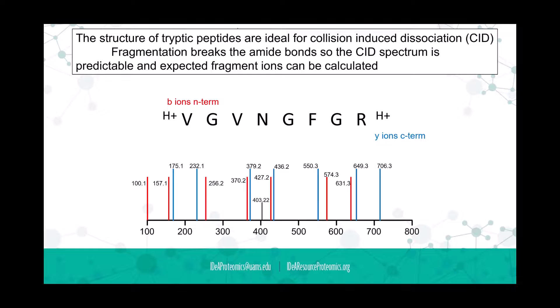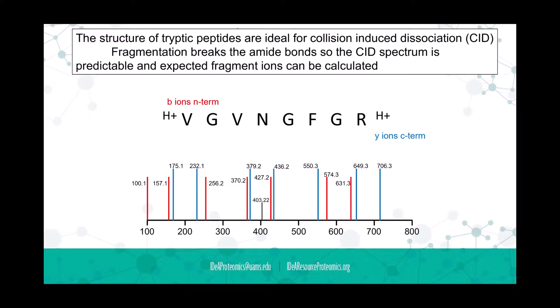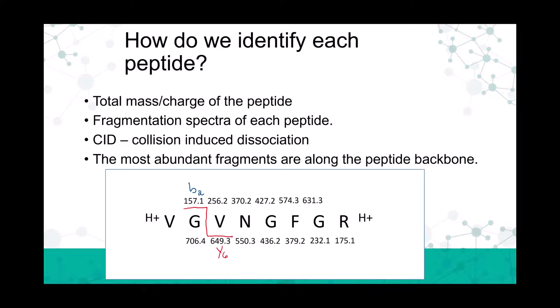Tryptic peptides are ideal for this collision-induced dissociation. The fragmentation breaks the amide bond, so the CID spectra—what you're looking at here in this slide—is predictable, and the expected fragment ions can be calculated. If I were to take this information and put it on a graph, you might see something like this. The difference between the red and the blue is that the blue would be the y ions, formed from the C-terminal end. The b ions would be those from the N-terminal end. You can see the different colors representing the different mass-to-charges of these two different series.